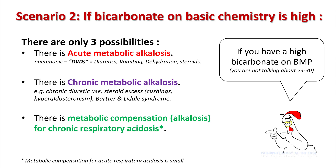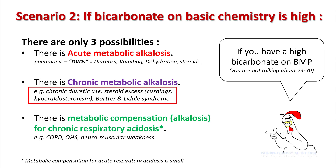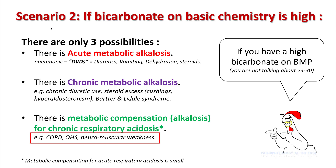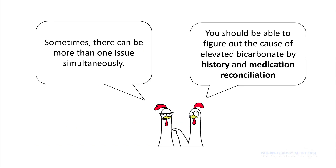If you have chronic metabolic alkalosis, think about chronic diuretic use, steroid excess, and rare syndromes like Bartter and Liddle. For patients who are metabolically compensating for chronic respiratory acidosis, think about COPD, obesity hypoventilation syndrome, neuromuscular weakness, and other causes for chronic hypercapnia. You should be able to figure out the cause for the alkalosis portion by taking a good history and doing a good medication reconciliation. And sometimes there can certainly be more than one issue simultaneously, so be cognizant of that fact.